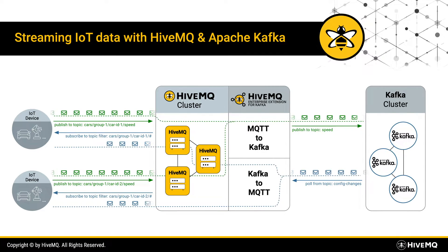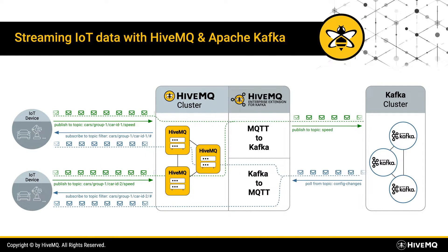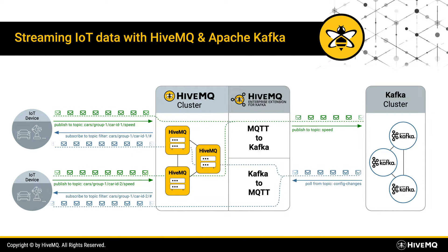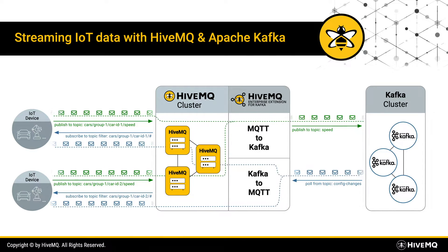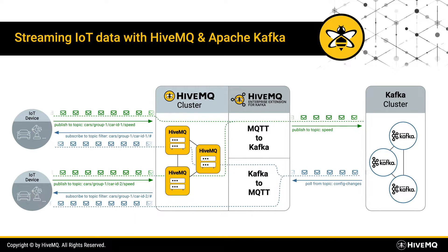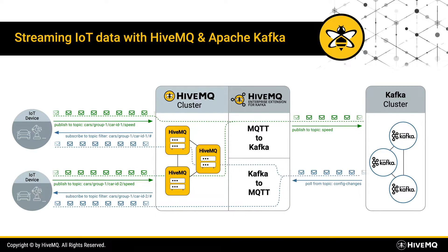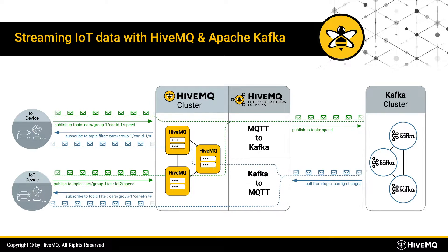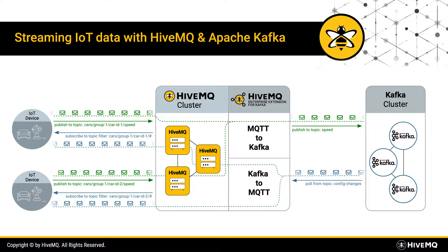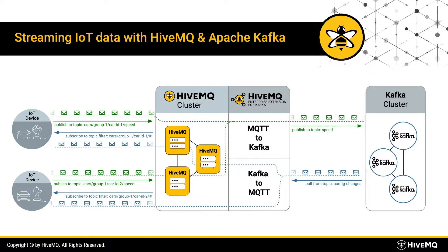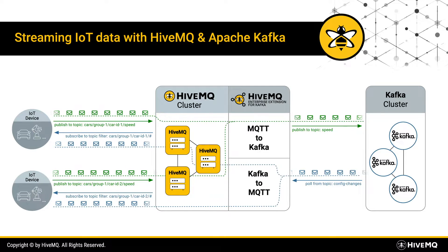With this, the extension for Kafka assures all delivery guarantees of both protocols. Ingesting IoT data from potentially millions of IoT devices to a limited number of Kafka topics is possible, just like the distribution of Kafka records to multiple IoT devices.